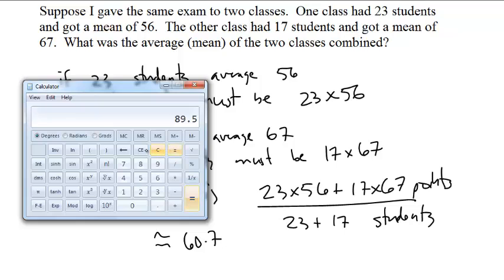56 plus 67 divided by 2 is 61.5. So it's a little bit less than that.